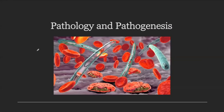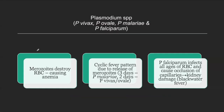Key pearls on pathology and pathogenesis: Anemia in malaria is caused by the destruction of RBCs by merozoites. Fever occurs due to the release of merozoites — the cyclic release explains the cyclic fever pattern. The cycle is three days for malariae and two days for both vivax and ovale.